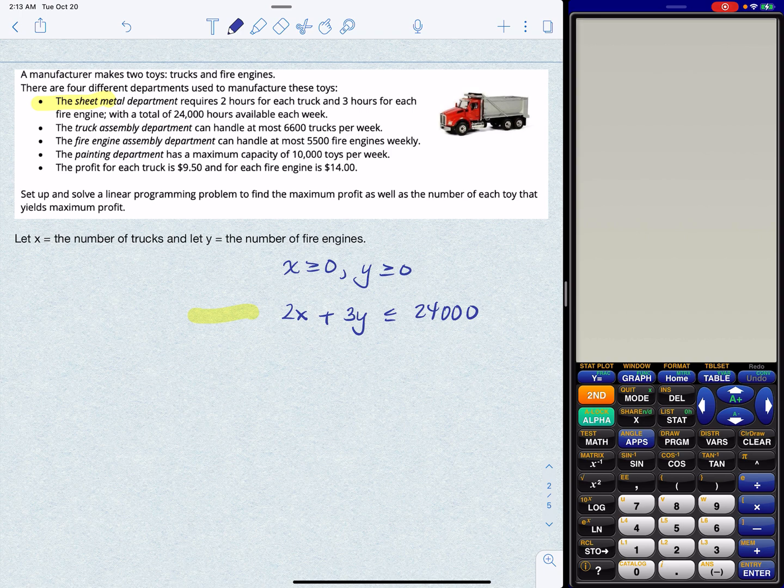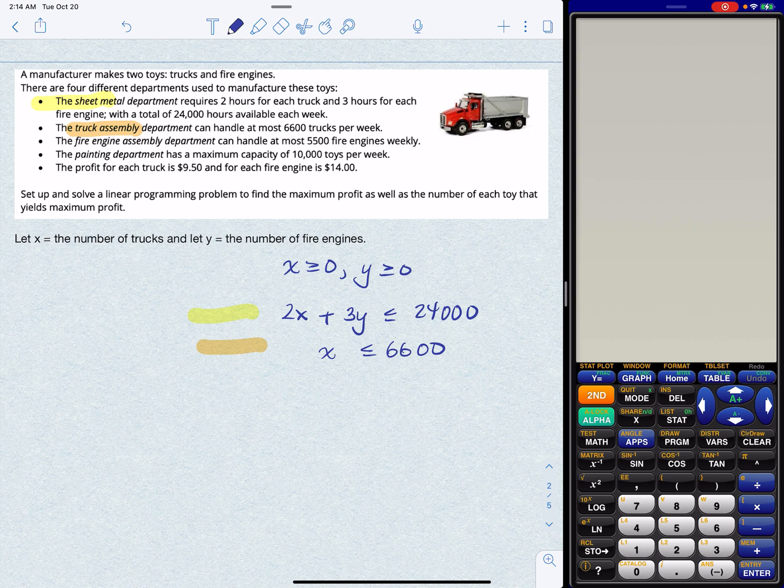Alright. So truck assembly, looking at the next constraint. I'm going to put that in orange here. Truck assembly. So truck assembly says they can handle at most 6,600 trucks per week. Nothing to do with fire engines. So this constraint only has to do with x. So we're going to say x is less than or equal to 6,600. Simple as that.